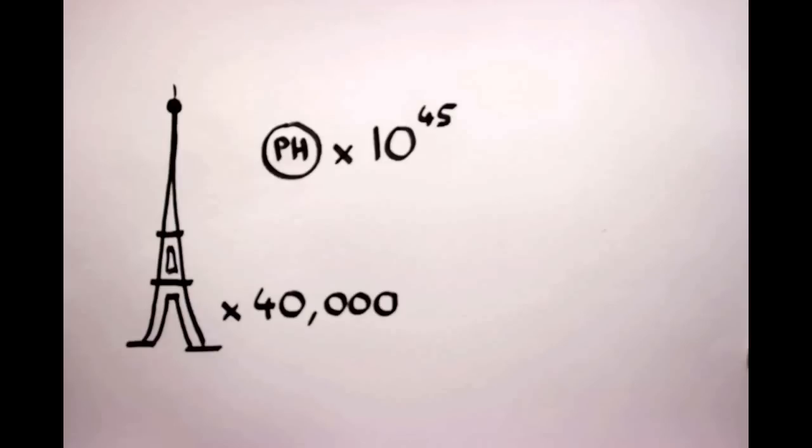Our sun, for example, converts 400 million tonnes of hydrogen into helium every second and as a result puts out 1 times 10 to the power of 45 photons of light every second. That is 1 with 45 zeros after it.